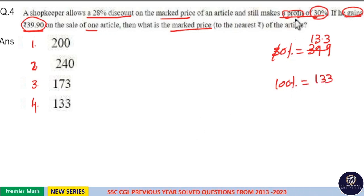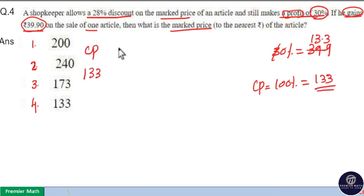Profit is always paid from cost price because this profit is made from cost price. So cost price is 100%, which equals ₹133. Now we have cost price as ₹133, and we have marked price and selling price.